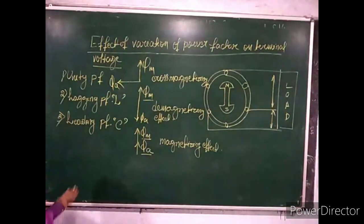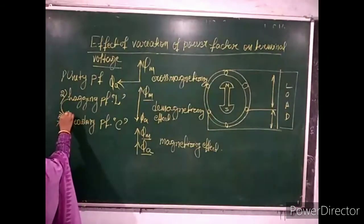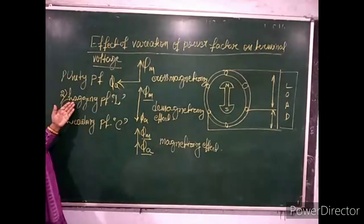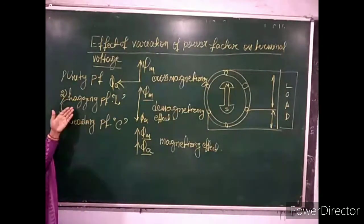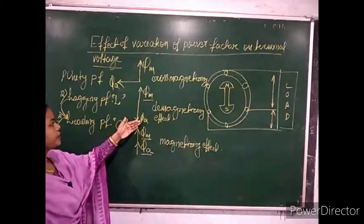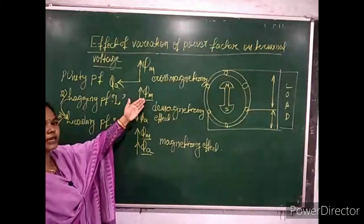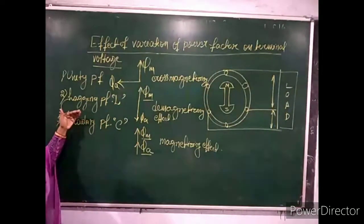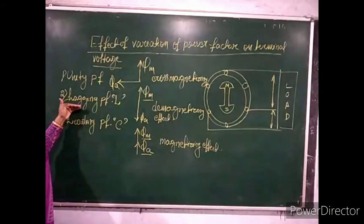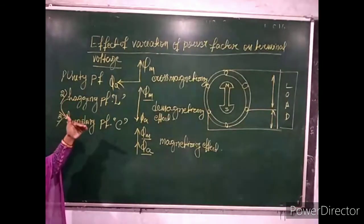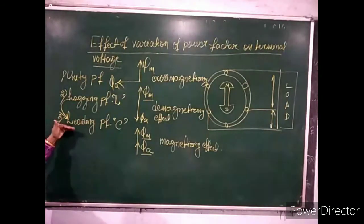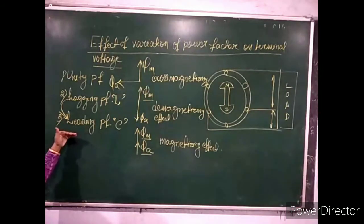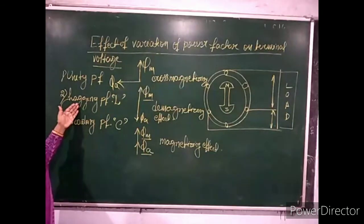If you go from lagging power factor to leading power factor — in lagging, the armature flux opposes the main flux, while in leading it assists. So if the power factor is lagging, the terminal voltage is less, and if it is leading, then the terminal voltage is more as compared to lagging power factor.